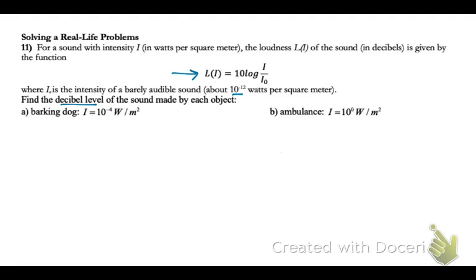If we want to find the decibel level of a barking dog, we're going to plug in 10 to the negative 4 for i. So loudness equals 10 times the log of 10 to the negative 4 divided by 10 to the negative 12. Now grab your calculator and just plug that in as you see it. You should get 80 decibels.